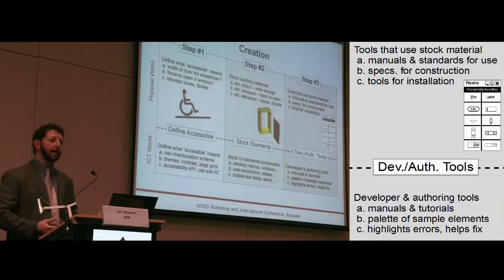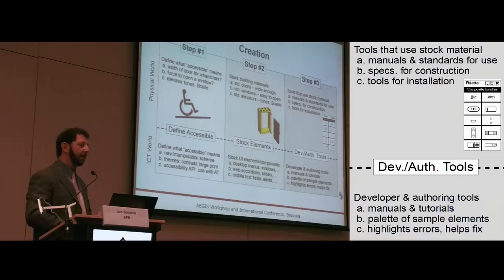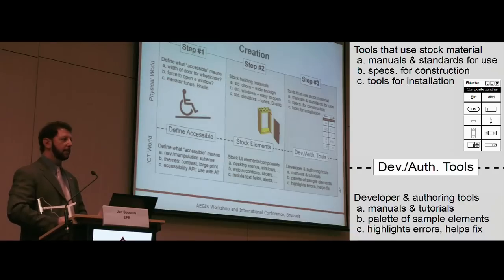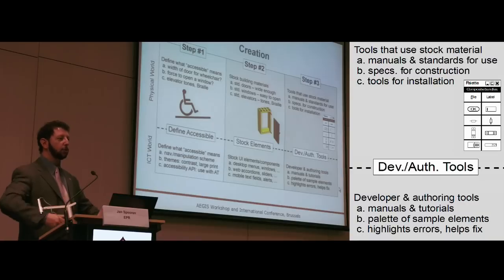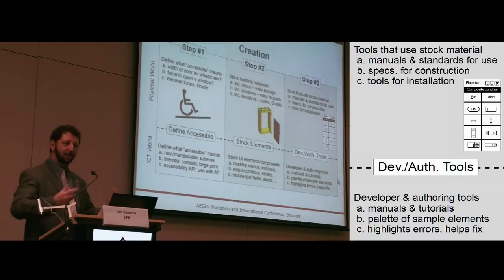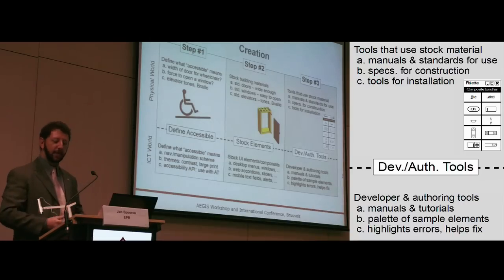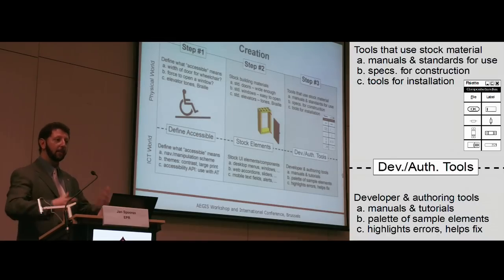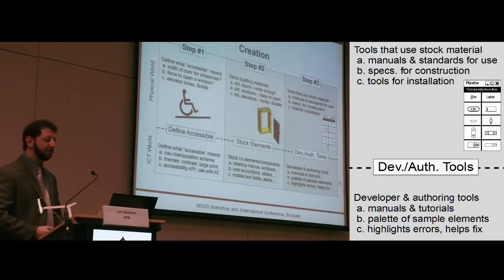The third step, as Maria said, we have a very important emphasis on developers. Jan addressed this as well. The tools that tell builders how to build a building should include information on how to make an accessible building, so that the developer of the building has all the information that they need. Similarly, for the ICT world, the developers of software applications need tools that help them create accessible applications. That's a big emphasis of Aegis.